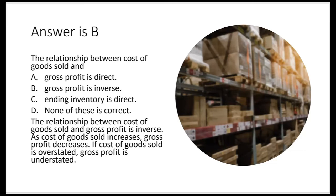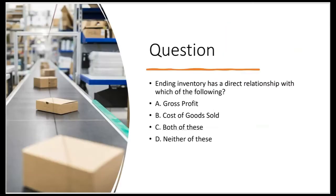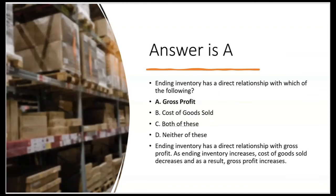The exam is going to test you on these relationships. The relationship between cost of goods sold and gross profit is inverse — as cost of goods sold increases, gross profit decreases. If cost of goods sold is overstated, gross profit is understated. Ending inventory has a direct relationship with gross profit — as ending inventory goes, so goes gross profit. If a company wants to show less profit, all they have to do is show less ending inventory. Ending inventory has a direct relationship with gross profit and an inverse relationship with cost of goods sold.